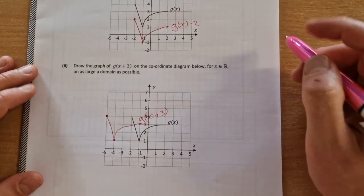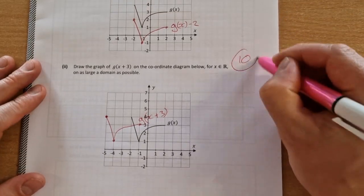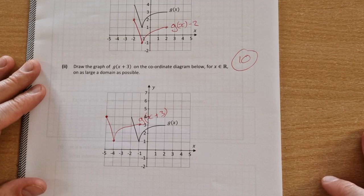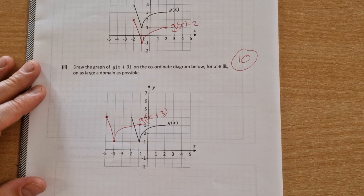Overall, after the adjustments to the marking scheme were made, that was worth 10 marks out of a possible 30. So thanks for watching. If you have any questions, just ask in the comments below, and I'll see you in the next video.